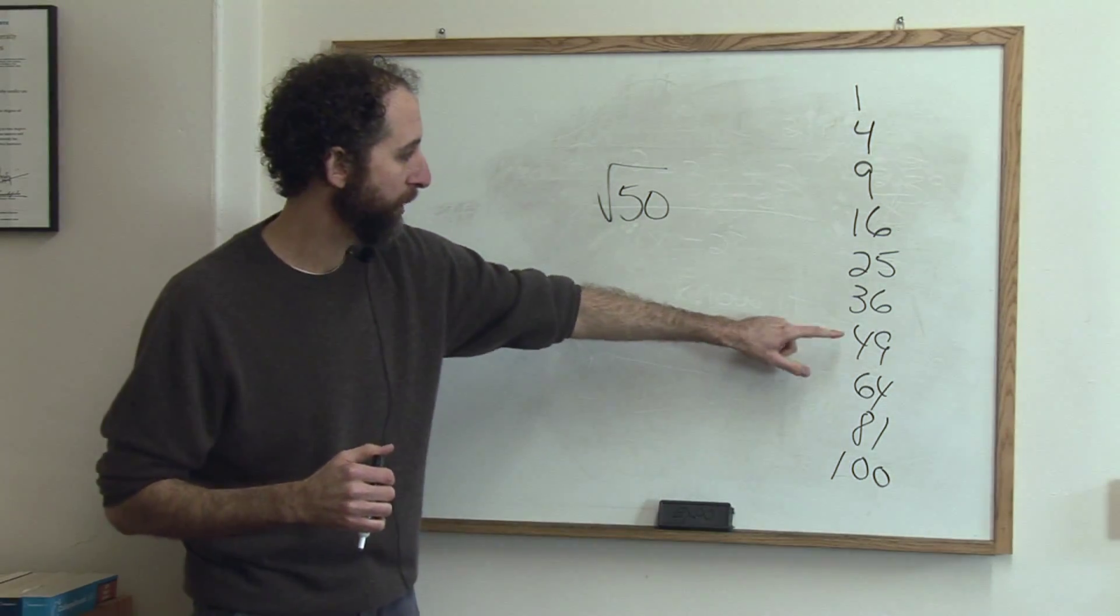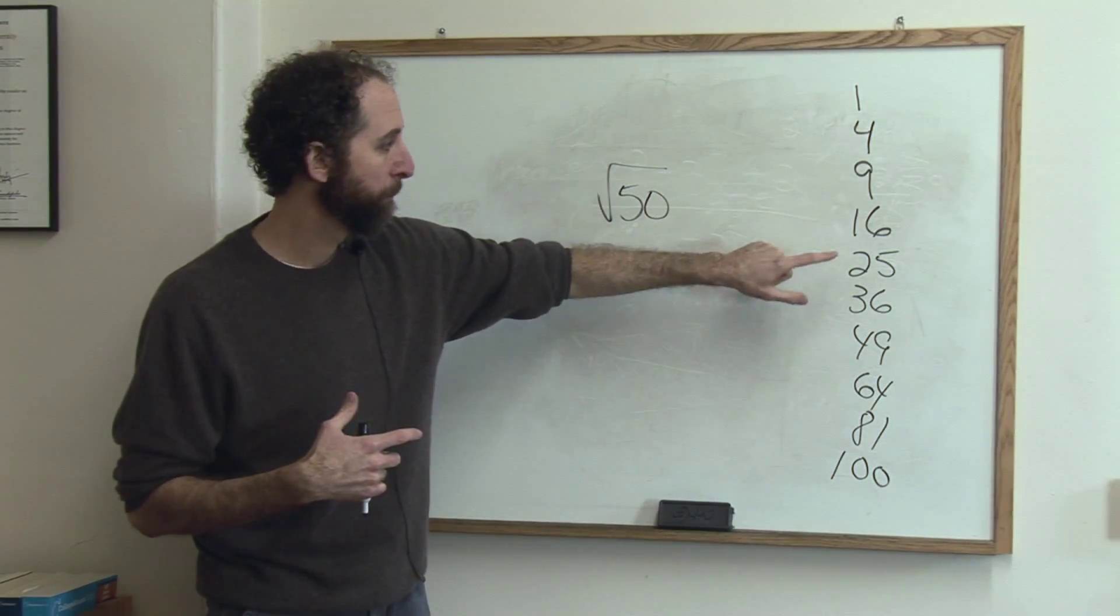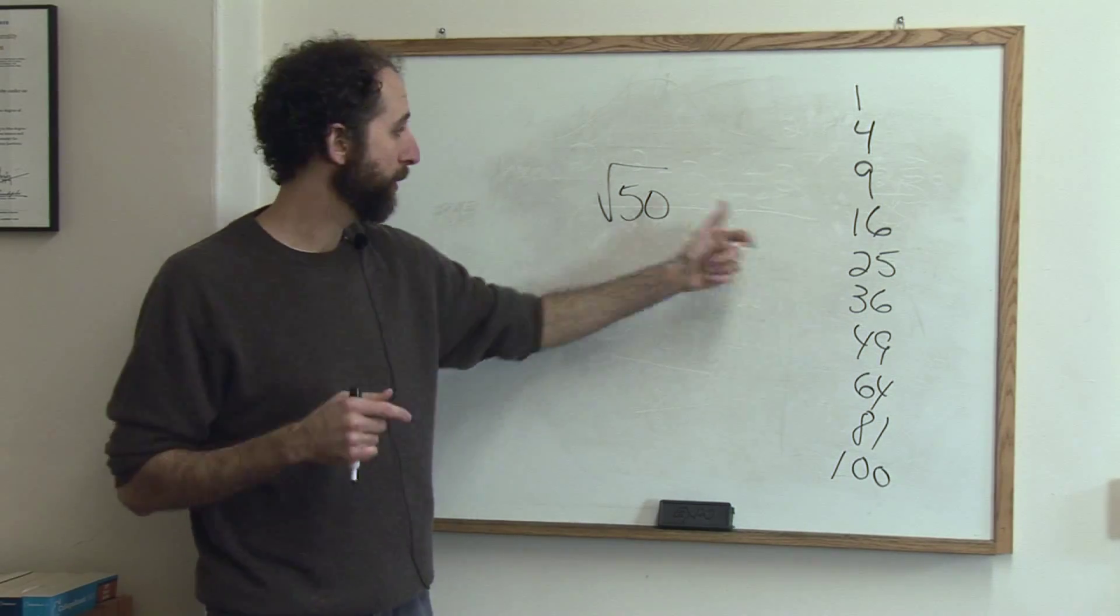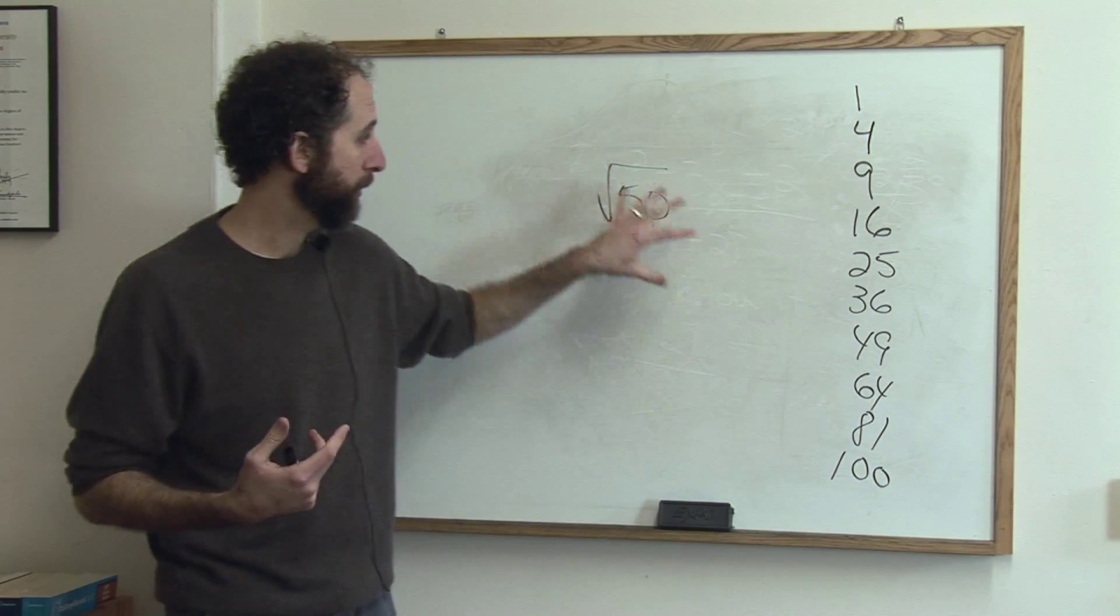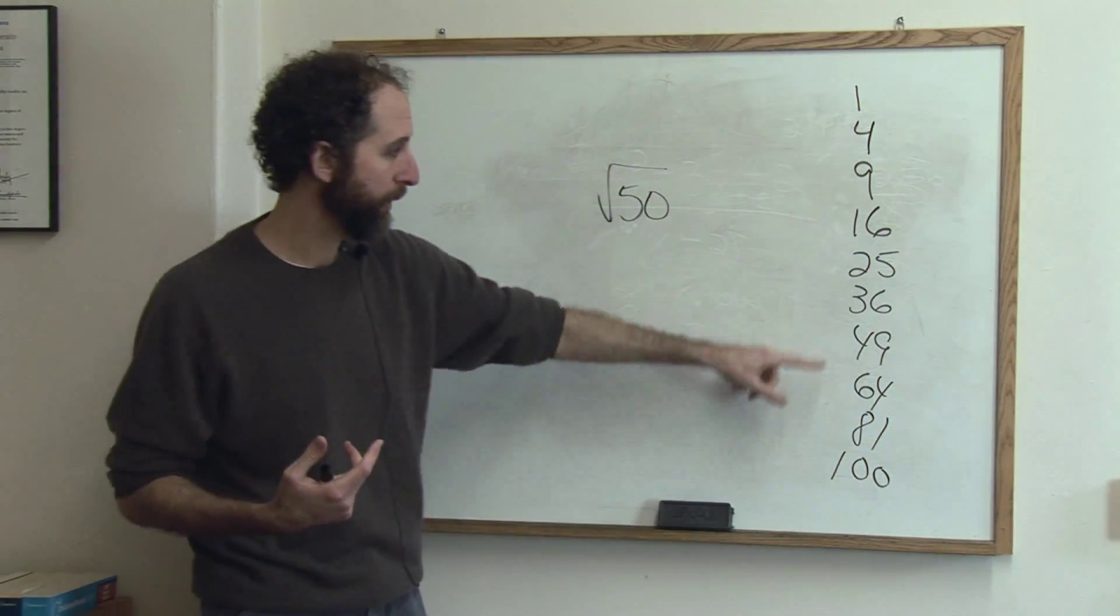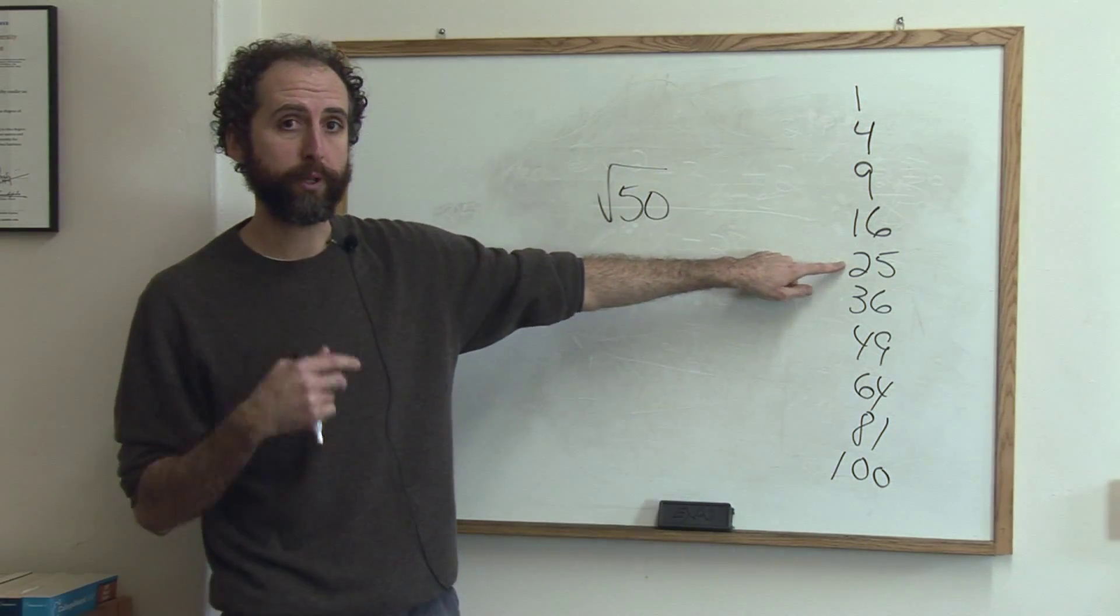It's too big, too big, too big, 49 still too big, too big, 25. 25 goes into 50. What we're really asking is which perfect square goes into 50. So you go down the list, the highest one, you always want the highest one is 25.